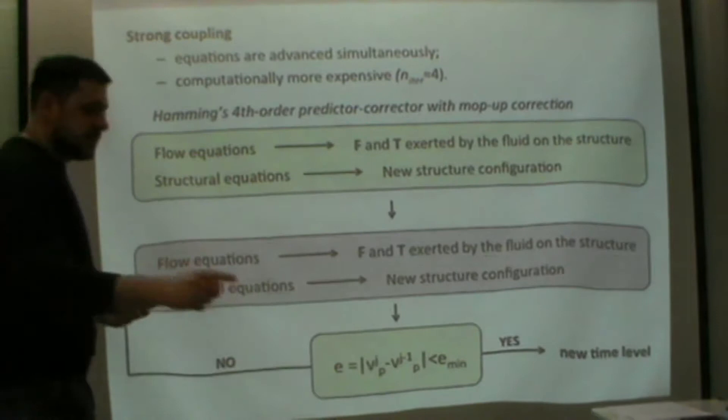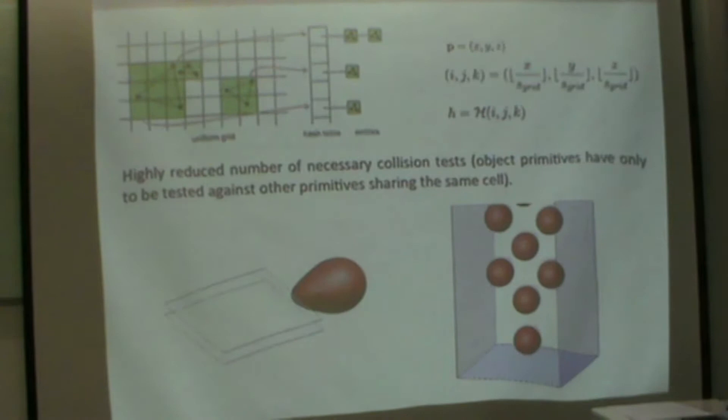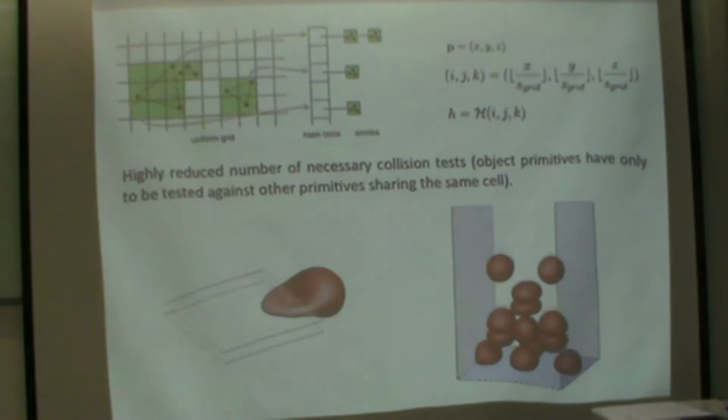A few words about collision modeling. We're using spatial hashing from computer graphics, so we have the primitives of the structures and build the hashing tables. We're using very simple collision techniques like a Lennard-Jones potential or something more complicated. We can handle structures going through thin plates or structures colliding with each other, but this is an approximation. I saw a very nice contribution yesterday; this is another place we can improve the model.